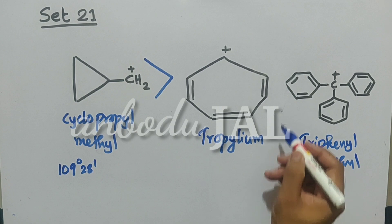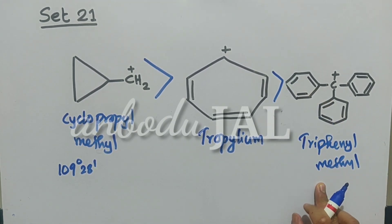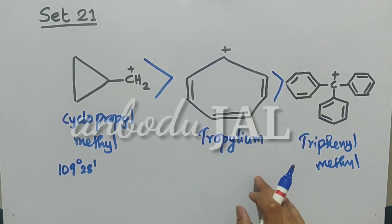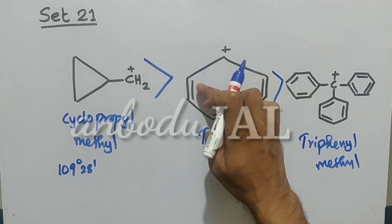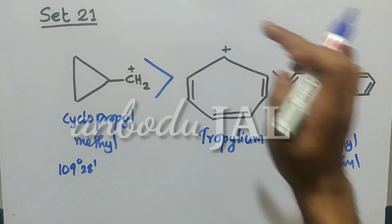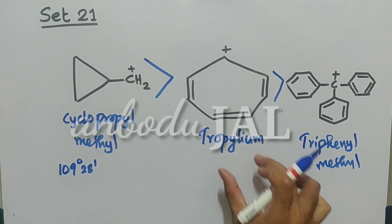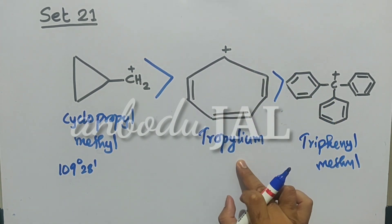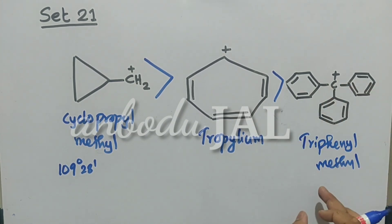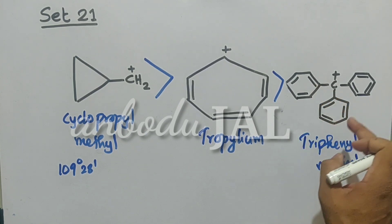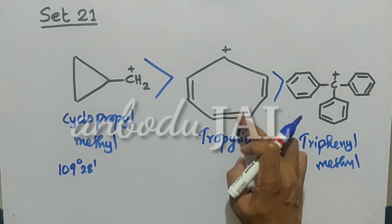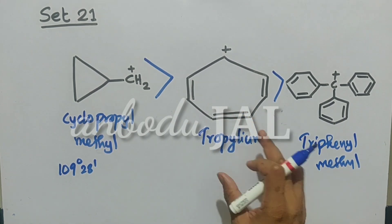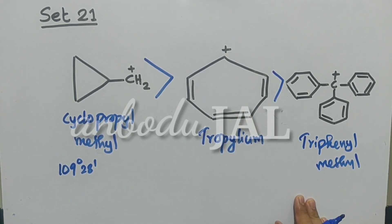Tropylium ion is more stable than triphenylmethyl carbocation. The reason is that in tropylium ion there are more conjugations than in the benzene groups of triphenylmethyl. Five conjugations are present in tropylium ion within a single ring. In triphenylmethyl carbocation, 15 resonance structures are possible, but those are spread across three benzene rings. More conjugations present in a single ring makes tropylium ion more stable than triphenylmethyl carbocation.